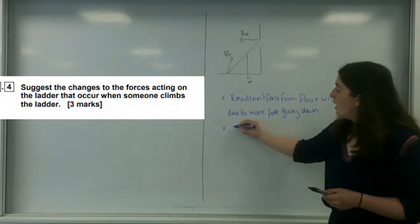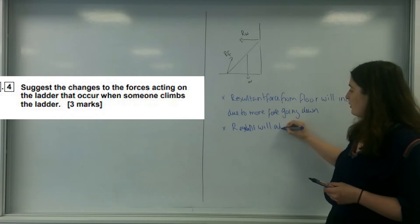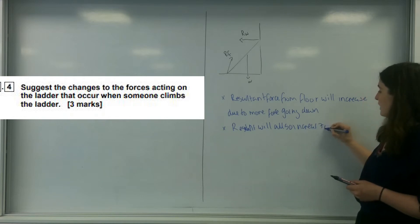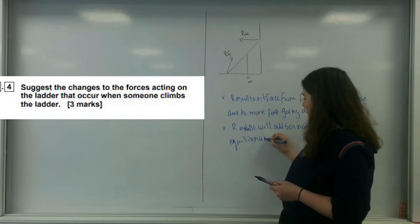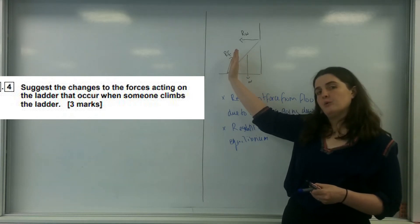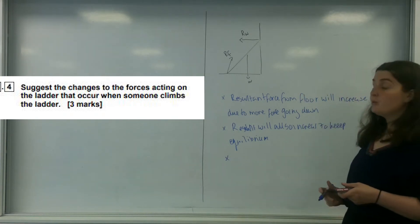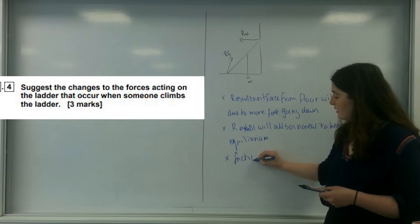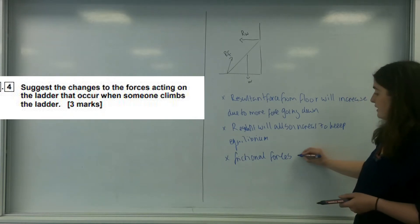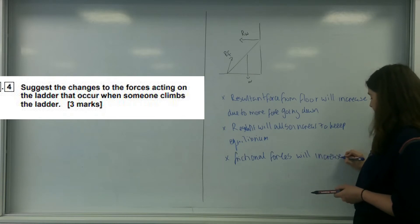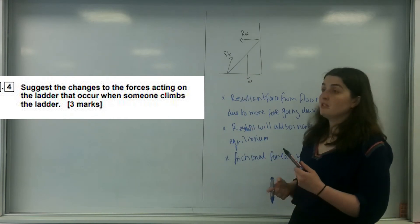This also means R — the resultant of the wall — will also increase to keep equilibrium. If this force from the floor goes up, because it is at a slight angle, this implies that the force from the wall might start having to go up too. However, it could also mean that the frictional forces will increase — the reaction force will change, but also the friction might increase as well.